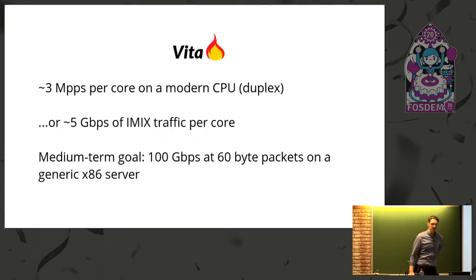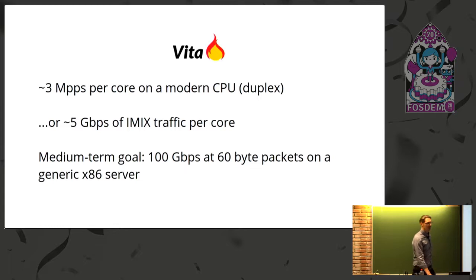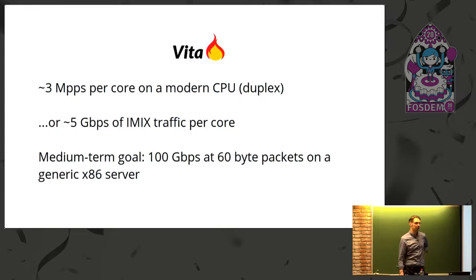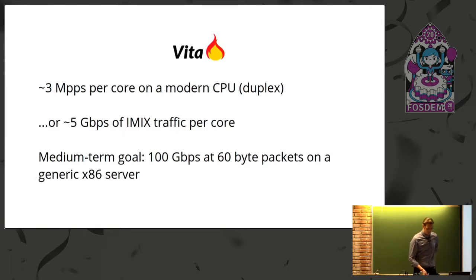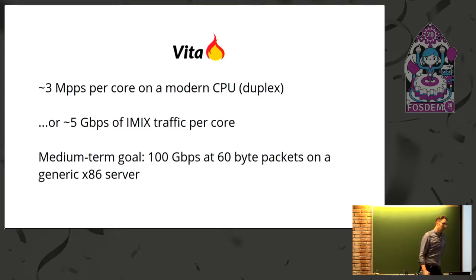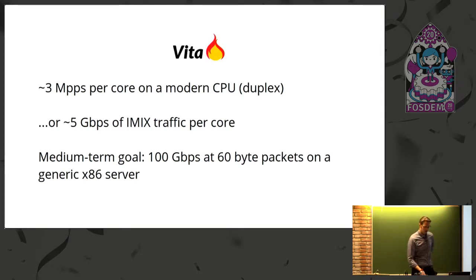What does high performance mean in this context? At the moment, Vita processes 3 million packets per second on a single CPU core. That translates to about 5 gigabits of iMix traffic per core, and these numbers are full duplex — so actually 6 million packets being processed per second on a core, 3 million being encapsulated and 3 million being decapsulated. The medium-term performance goal of Vita is to be able to do 100G on a generic x86 server you can buy off the shelf — I'm betting on increasing core counts, thinking a Zen 2 with 64 cores might just be able to do it.